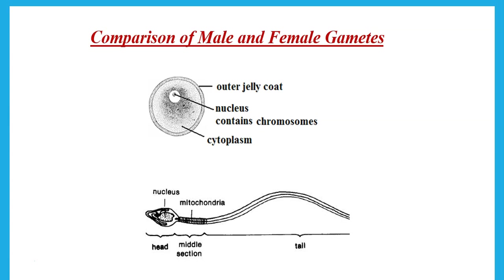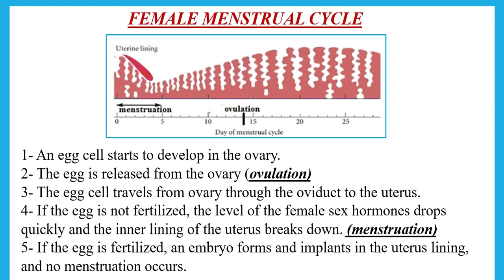The sperm also has a nucleus in the head that contains the genetic material of the male parent. At the front of the head there is an acrosome that releases enzymes, allowing it to penetrate through the egg's outer jelly coat. Inside the egg there is a large amount of cytoplasm and a nucleus — the female nucleus — which carries the genetic material from the female parent.